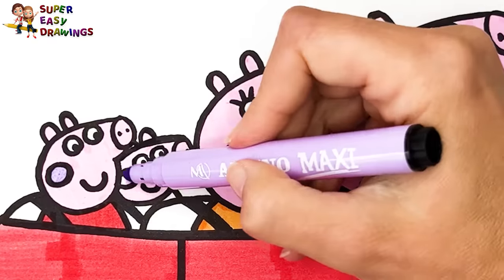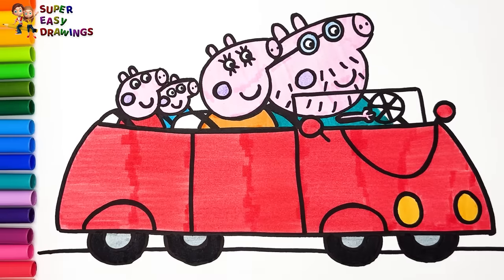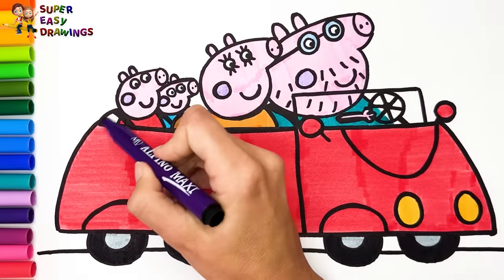Finally we are going to color George Pig. I use pink for his skin. I color his outfit with this blue marker. I use brown and purple for the seeds.